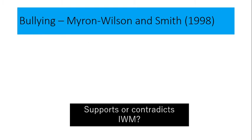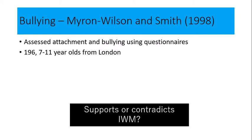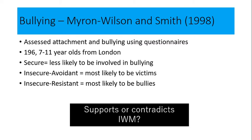Second study: Myron Wilson and Smith. They used questionnaires to assess attachment and bullying within 7 to 11 year olds. They found that if children had a secure attachment, they were less likely to be involved in bullying. If they'd had an insecure avoidant attachment, they were more likely to be victims. And if they'd had an insecure resistant attachment, they were most likely to be bullies. This supports the internal working model because those who were secure showed more positive relationships, while insecure attachment was linked to negative bullying behaviours.